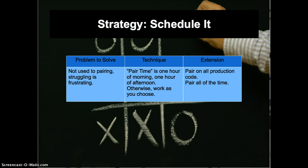How about scheduling pair time in the morning, and the rest of the day you work as you're accustomed to? This allows you to compare the work you do as a pair versus work you do individually. Ultimately you want to pair on all production code all the time.